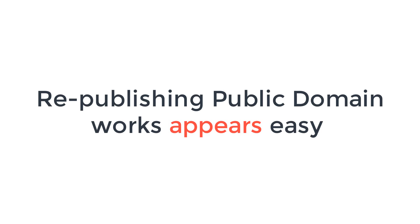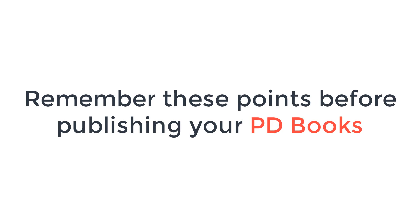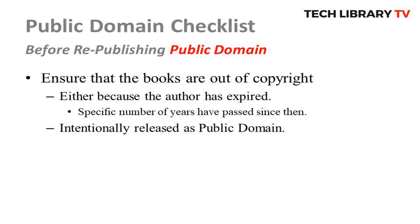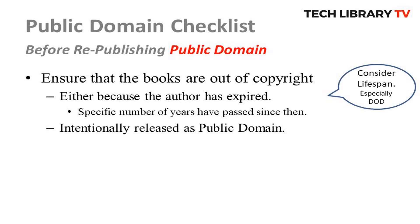These best practices serve justice to the original work and, of course, the readers buying the work from you. It may be easy to publish a work that's not ours, but this also needs a lot of prudence on our part. For example, we must ensure the following: number one, that these are books that are out of copyright — either because the author has passed and a specific number of years have elapsed, or they are intentionally released as public domain. It goes without saying that it's up to us to validate and evaluate the public domain content before we publish it.